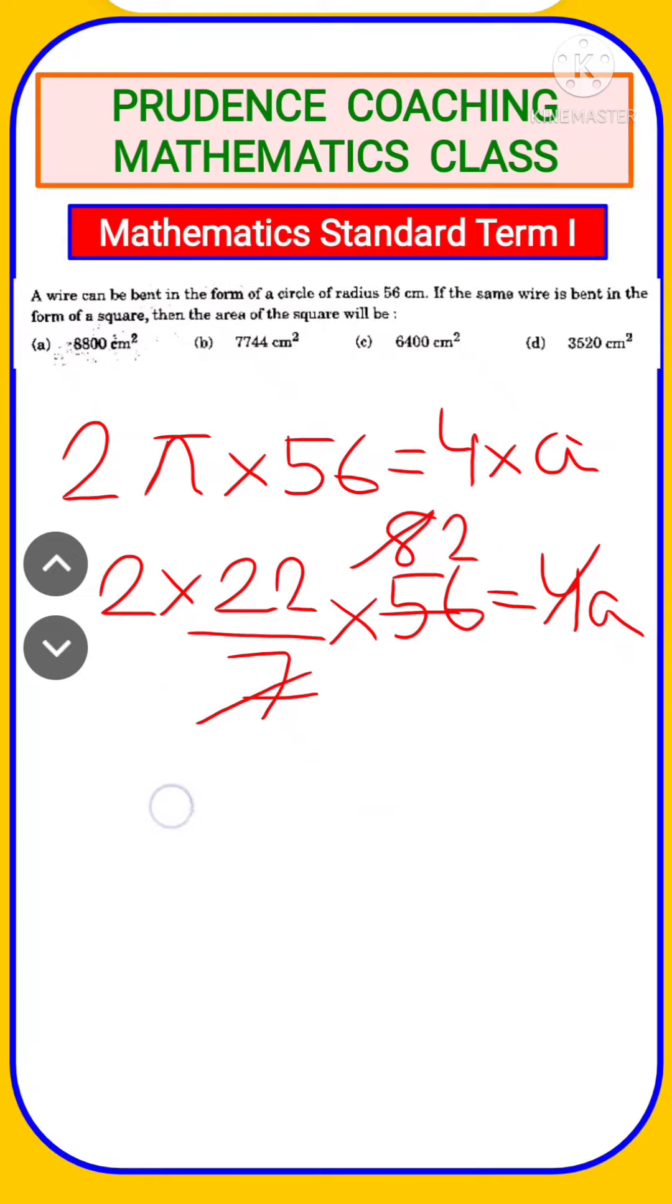4 twos are 8. So a equals 2 twos are 4, 4 twos are 8. 8 × 11 gives us 88 cm, which is the side of the square.